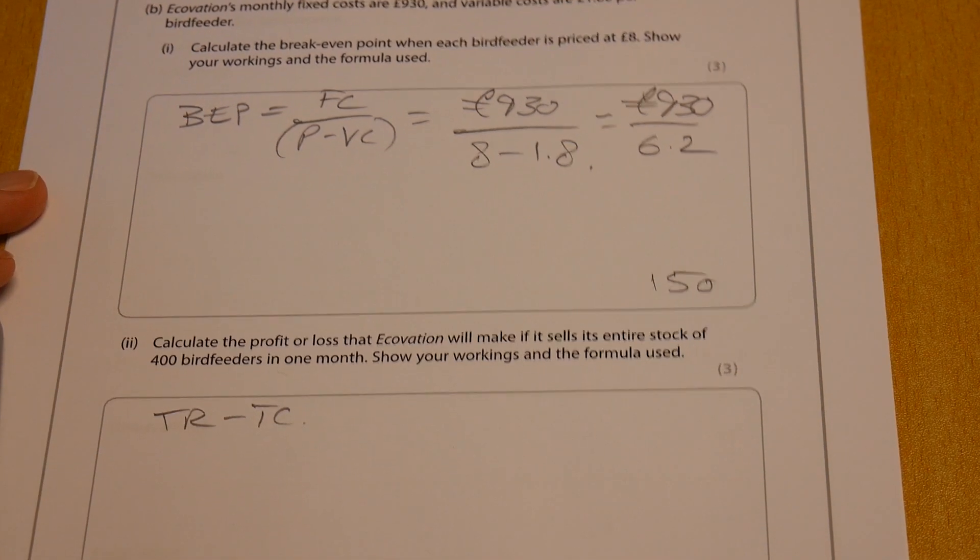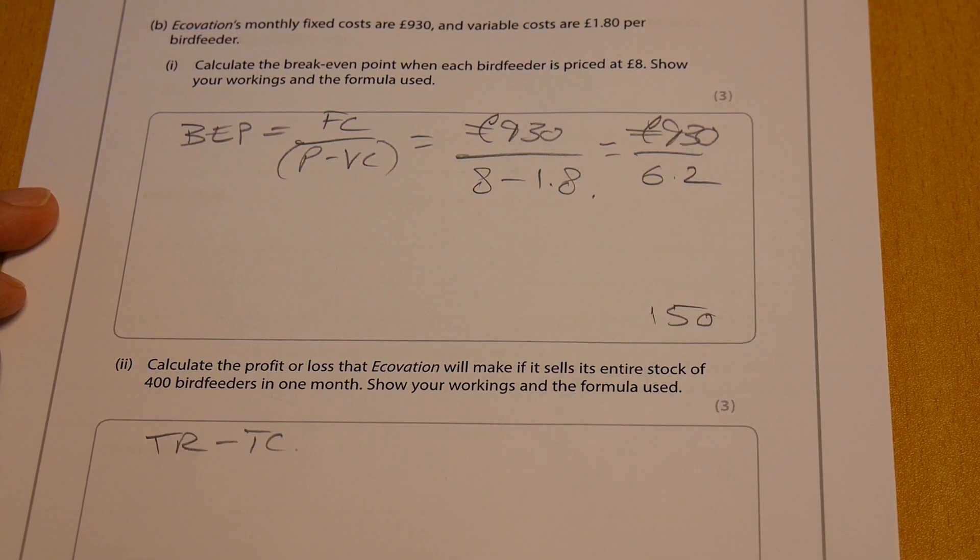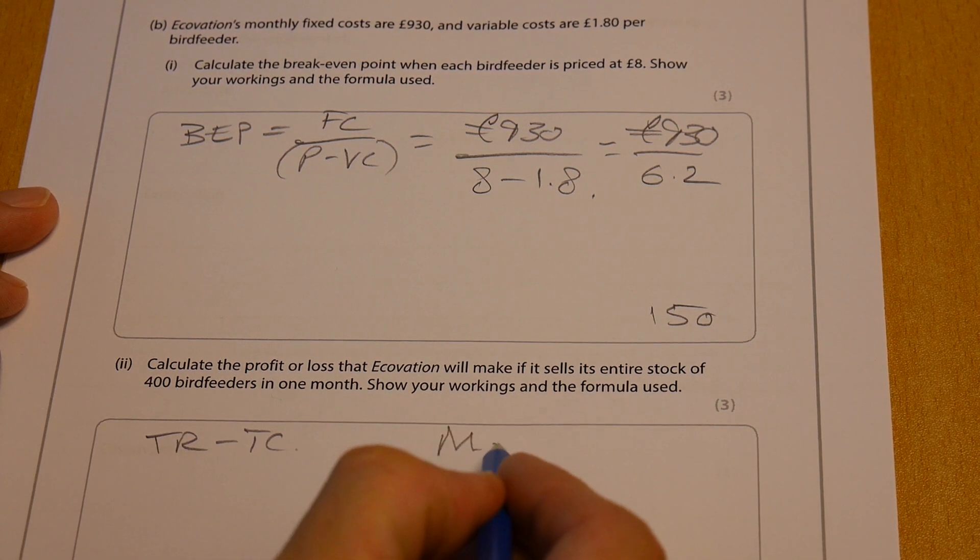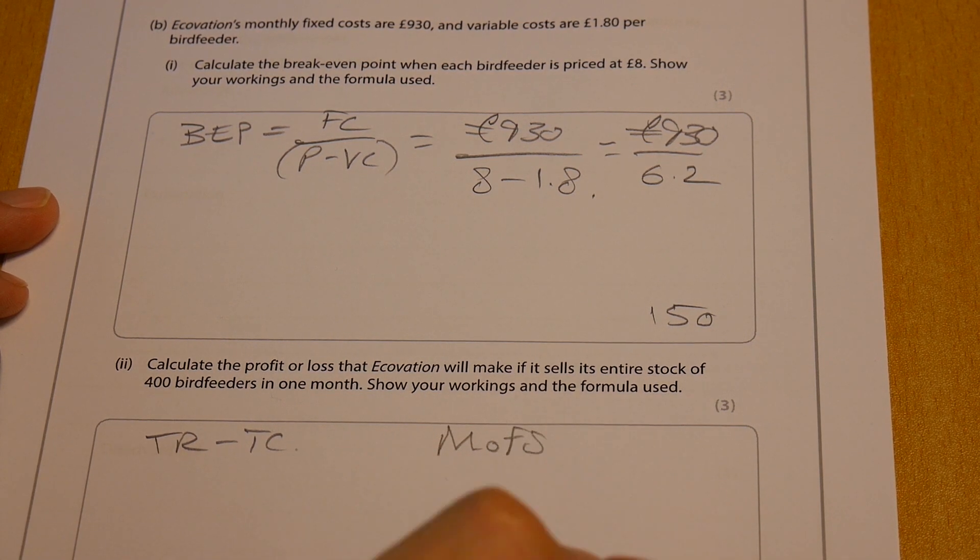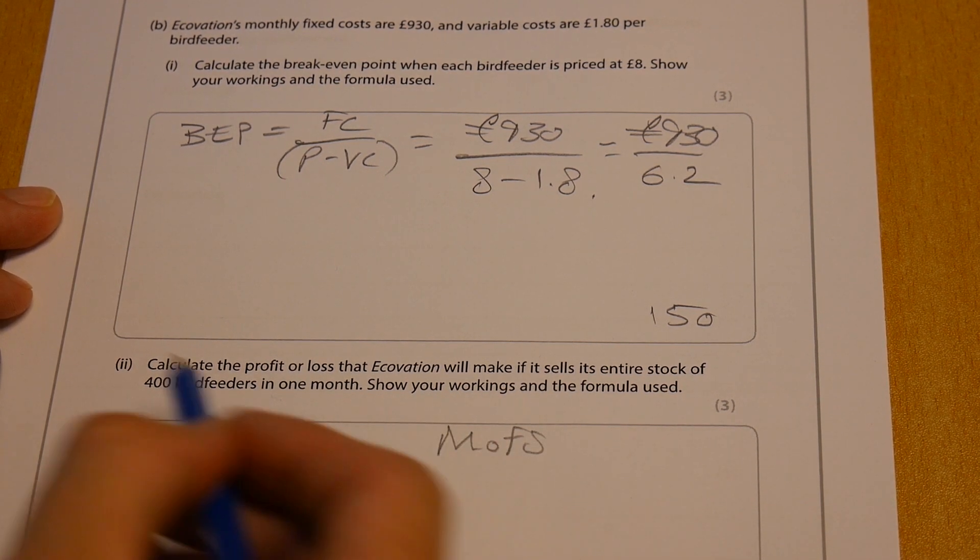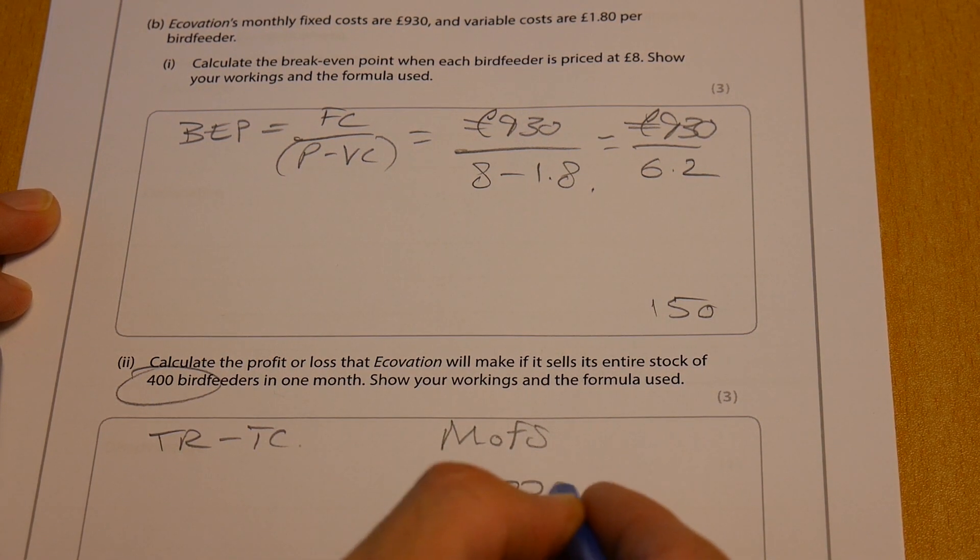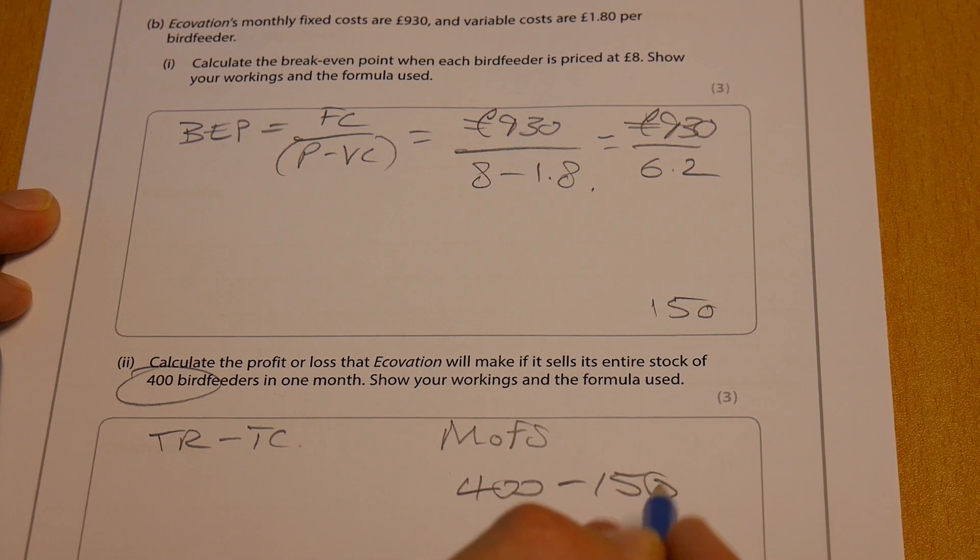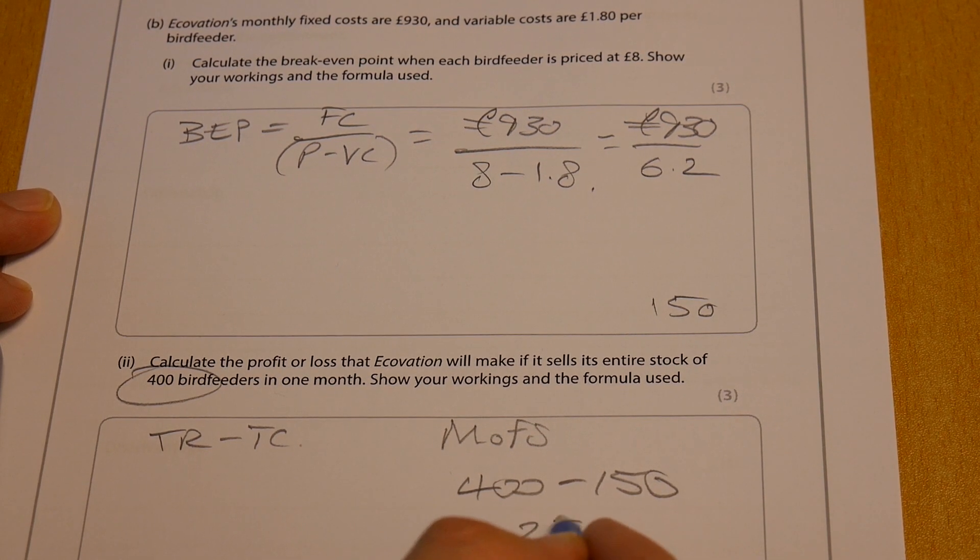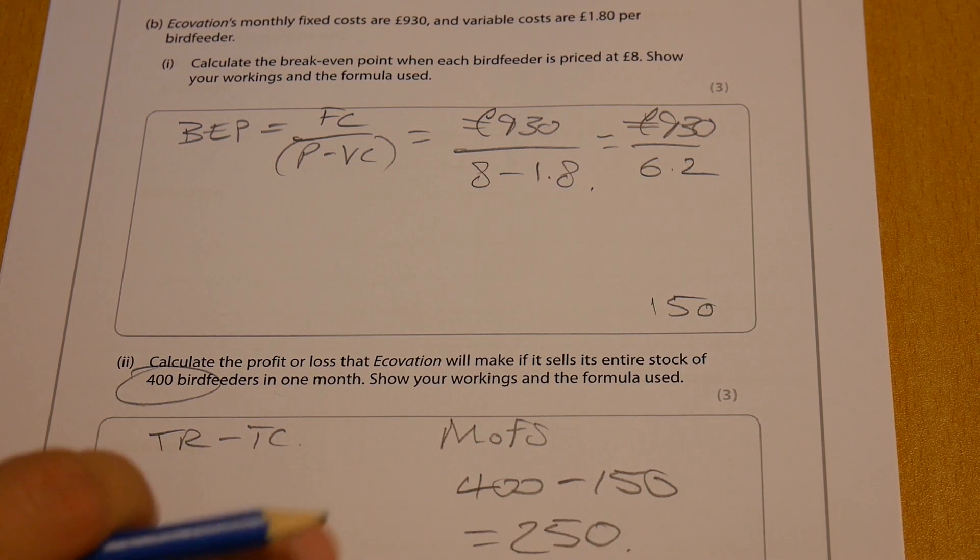The first thing you're likely to want to do rather than doing total revenue minus total cost, which is just hard work - and since you know the break-even point is 150 - what you can do is actually work out your margin of safety. Your margin of safety is of course going to be your actual output, which is 400 bird feeders, 400 minus 150. So 400 minus 150, that of course gives us 250. Very nice.